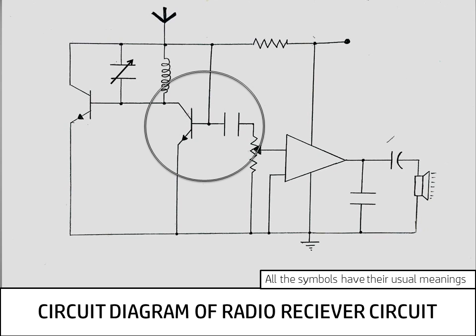In the next circle we have the transistor which acts as the amplifier for the previous signals.